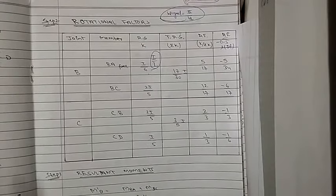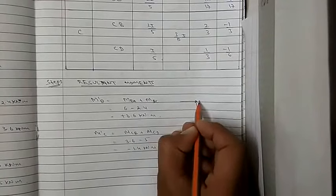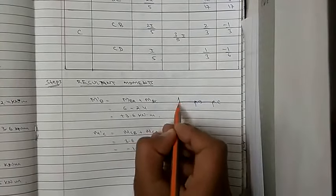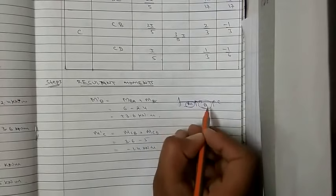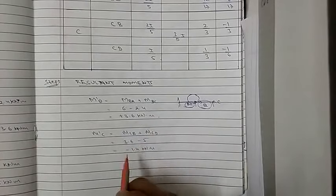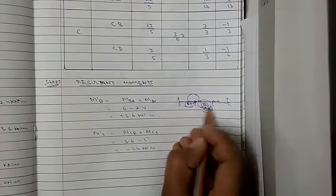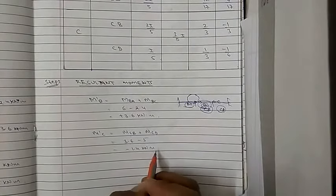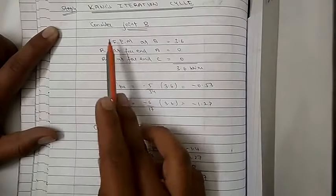Now we calculate the resultant moments. The resultant moment at B, M'B, equals MBA plus MBC: 6 plus minus 2.4 equals 3.6 kN·m. At C, M'C equals MCB plus MCD: 3.6 plus minus 5 equals minus 1.4 kN·m. With these, we begin Kani's iteration cycle to find all rotational contributions.